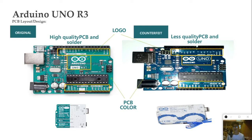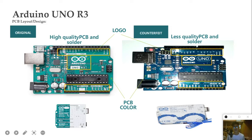In this section we will talk about the PCB layout and design differences. For the original, we can see the differences between its logos — the original shows the R logo. For the counterfeit, we will see the TML trademark logo. Also, for the pin labels, the printed text for its pins is more clearly indicated on the original than on the counterfeit.